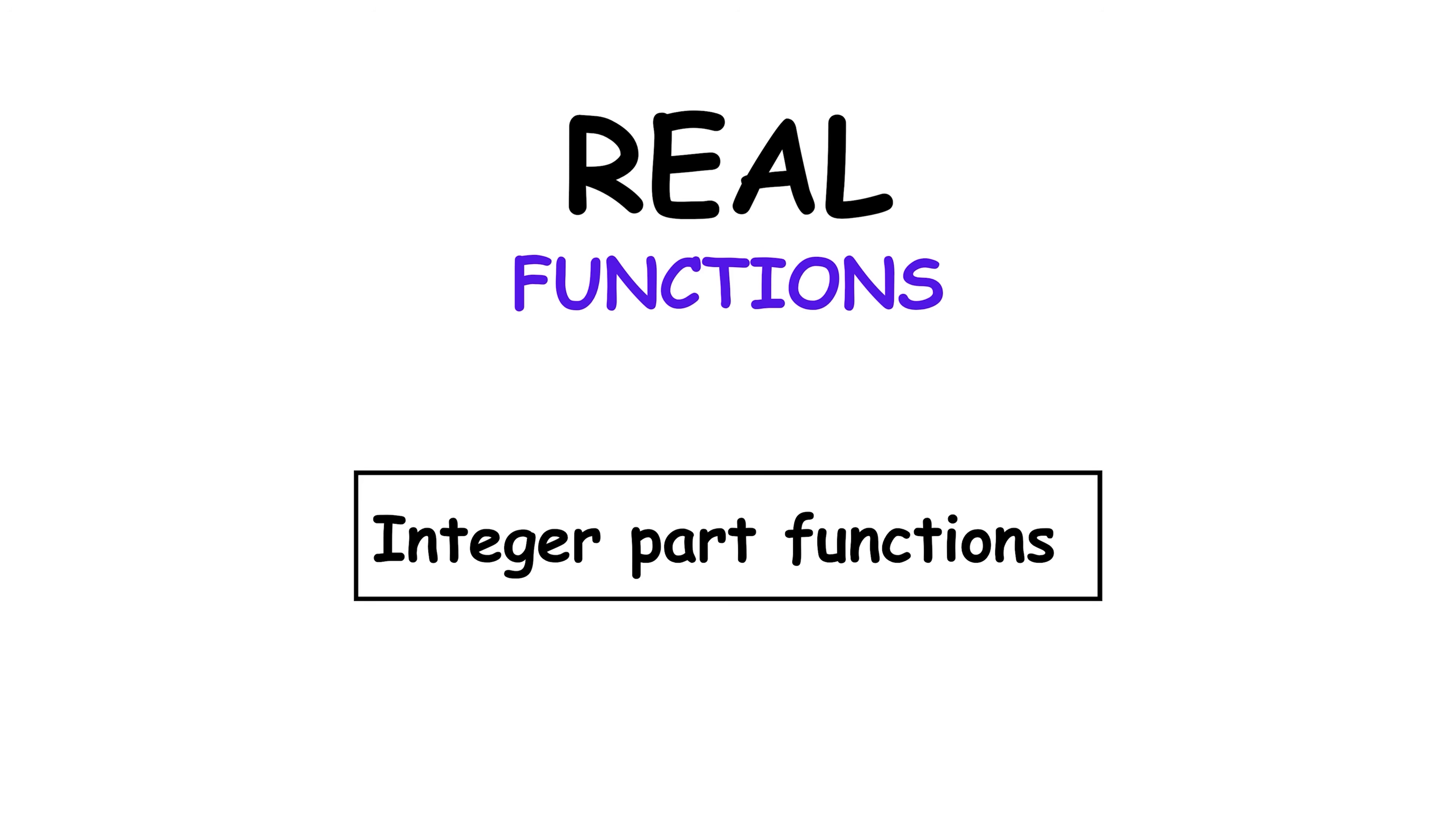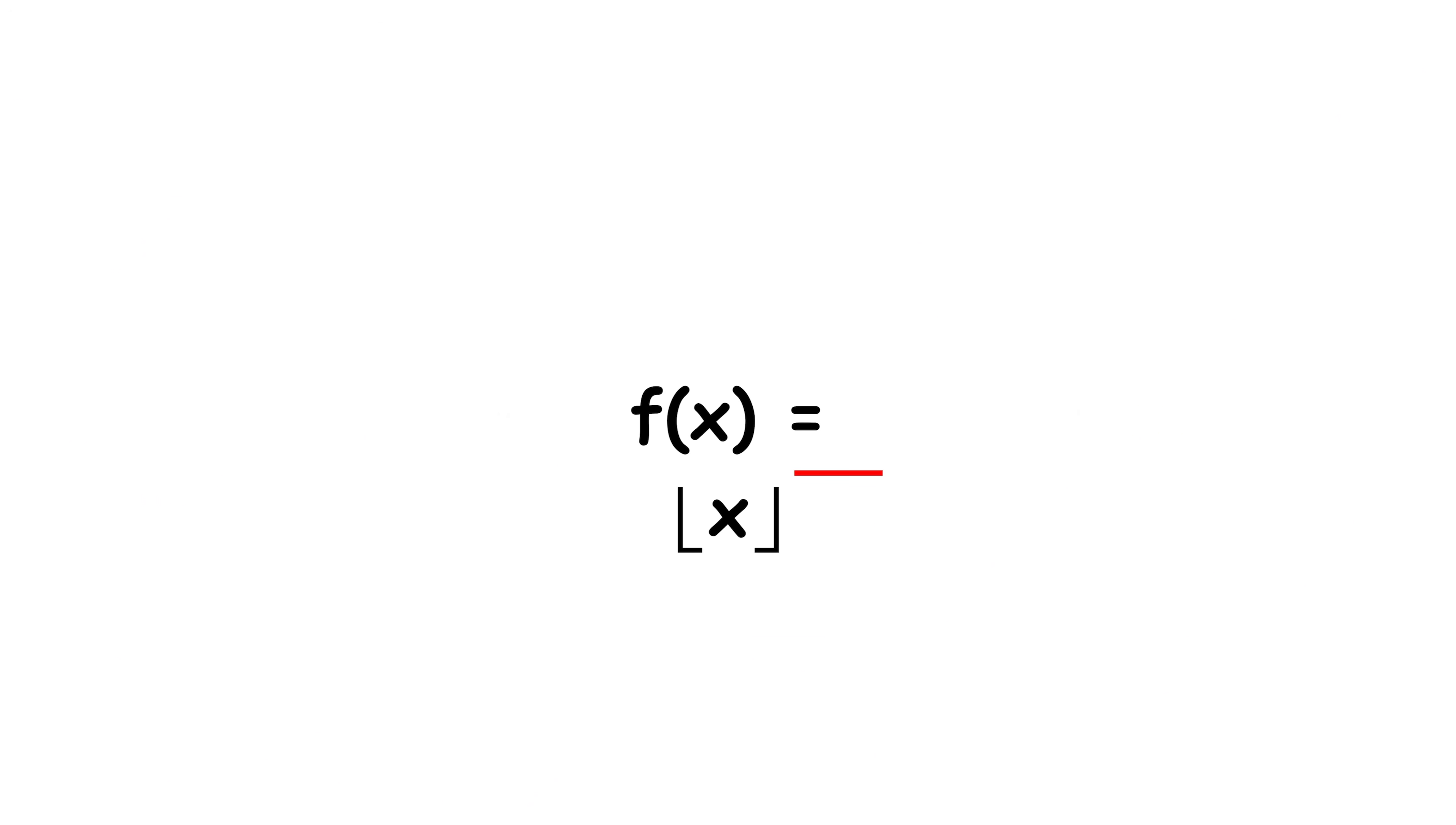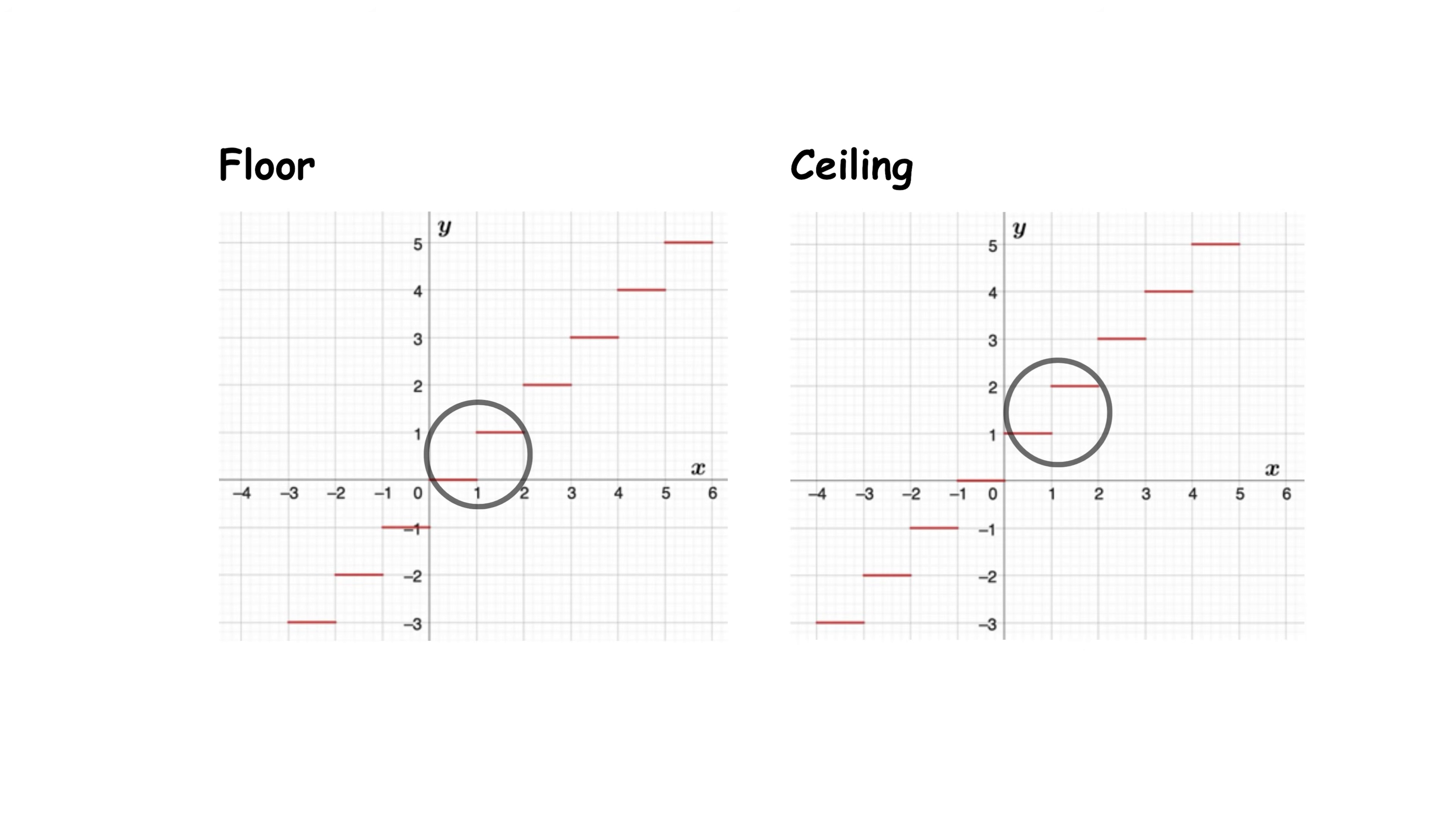Integer part functions, floor and ceiling. The most well-known integer functions are the floor and ceiling functions. f of x equals floor of x gives the greatest integer less than or equal to x. The ceiling function f of x equals ceiling of x gives the smallest integer greater than or equal to x. These are step functions and are discontinuous. They display jumps at each integer.